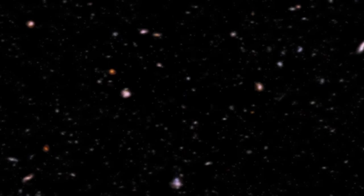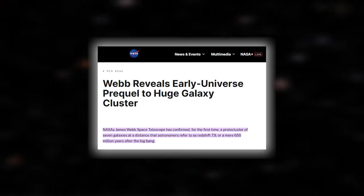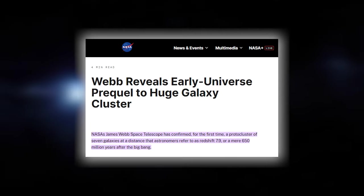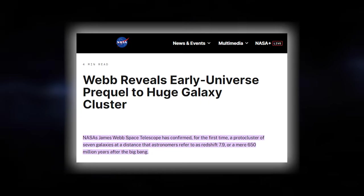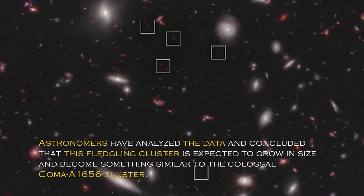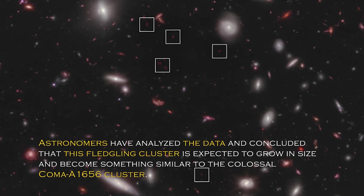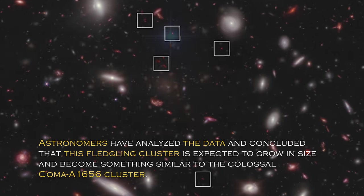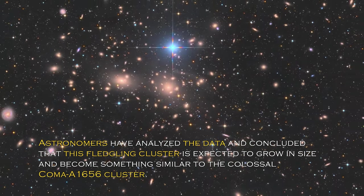Despite this, NASA recently tweeted about a galaxy cluster that lies just 650 million years after the Big Bang, adding another intriguing piece to the puzzle. Astronomers have analyzed the data and concluded that this fledgling cluster is expected to grow in size and become something similar to the colossal Coma A1656 cluster.